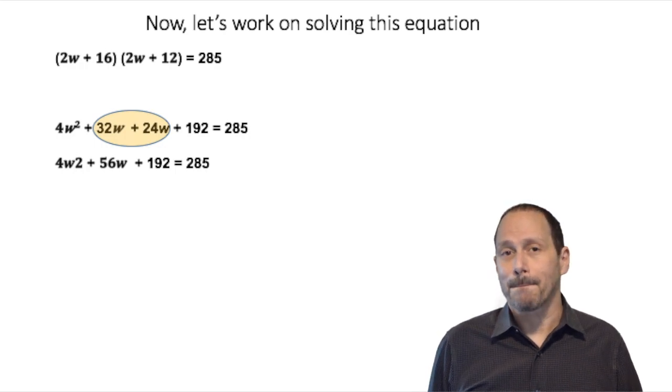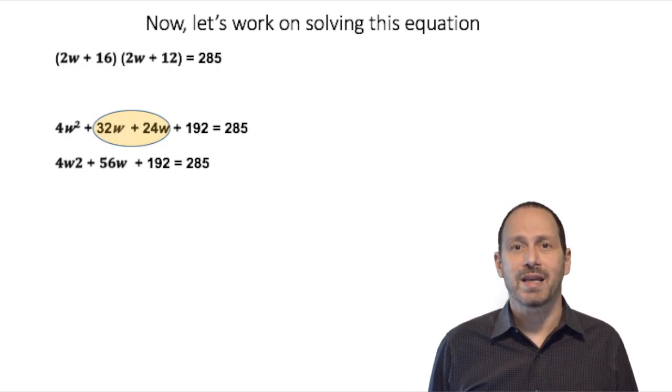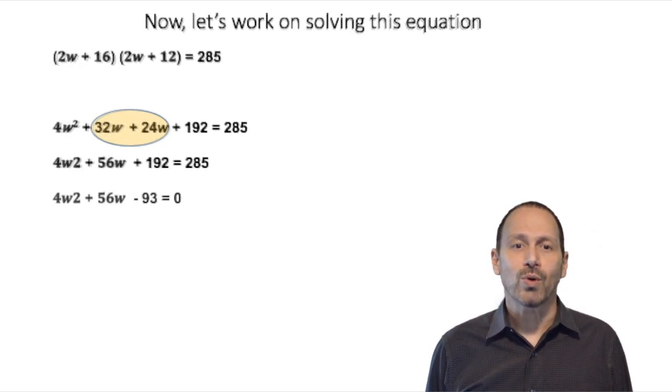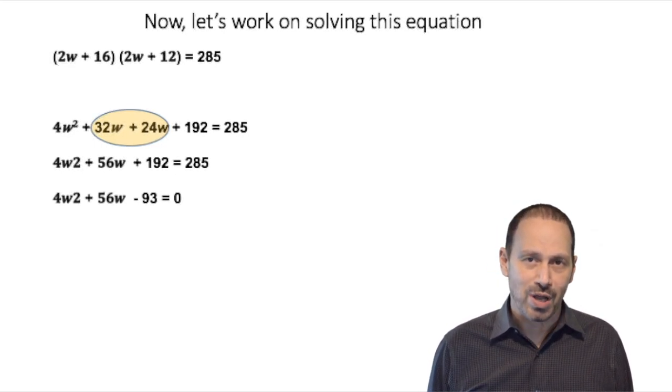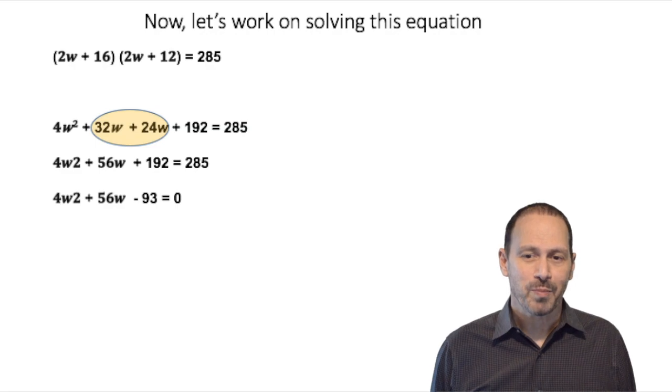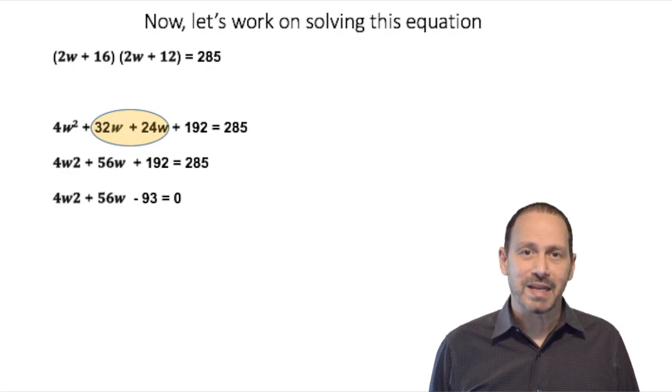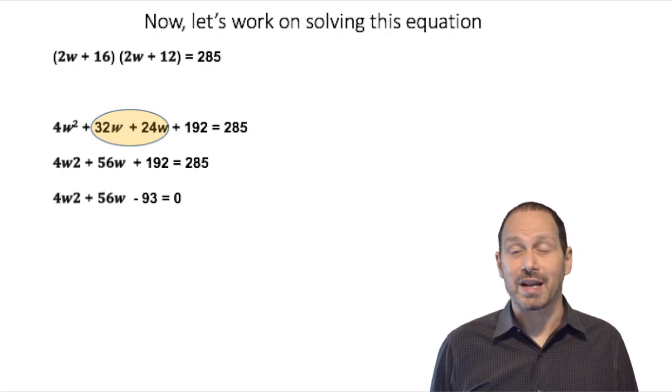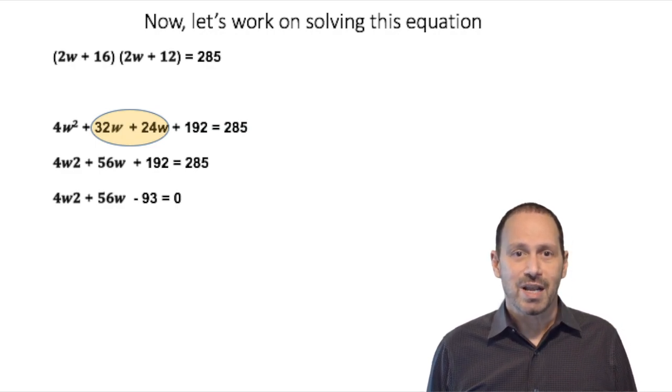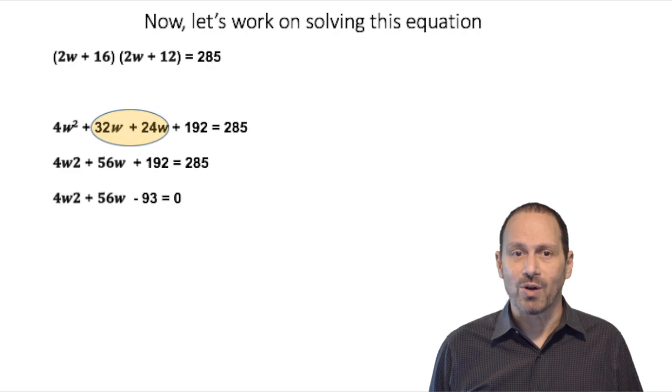Now when we bring the equation, when we make the equation equal to zero, we get 4W squared plus 56W minus 93 equal to zero. Now the advantage of making the equation equal to zero is that now we can factor the trinomial that is on the left. And when we factor this trinomial, we get 2W plus 31 multiplied by 2W minus 3 equal to zero.